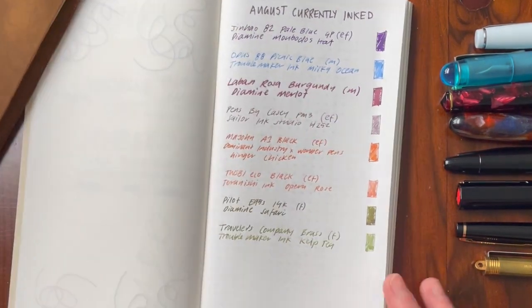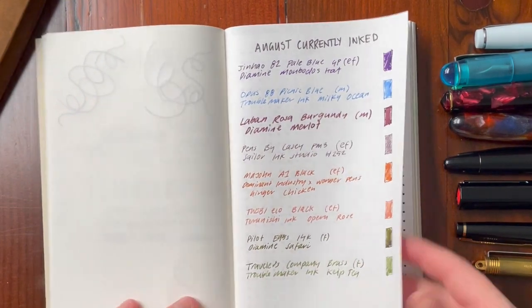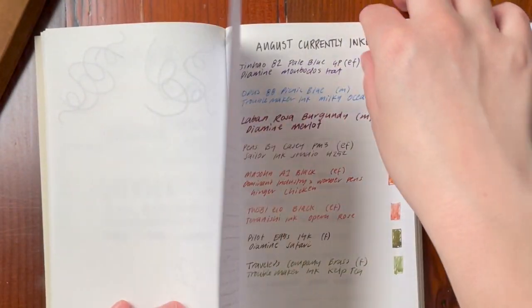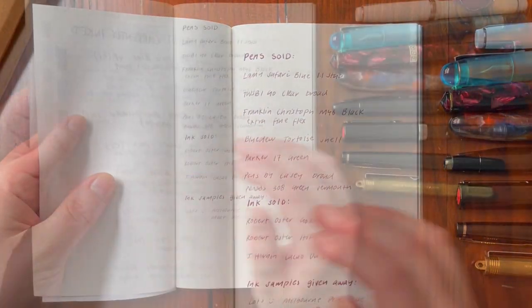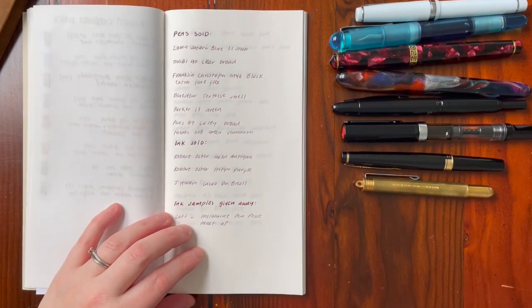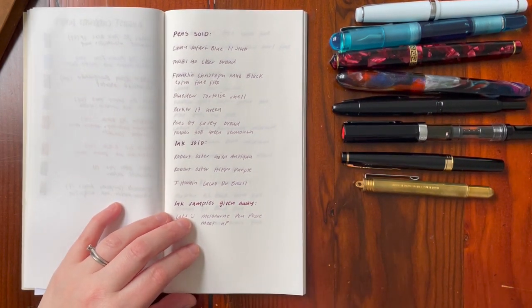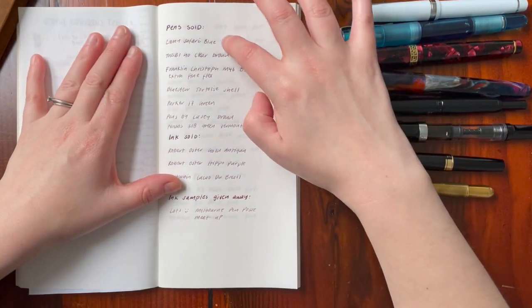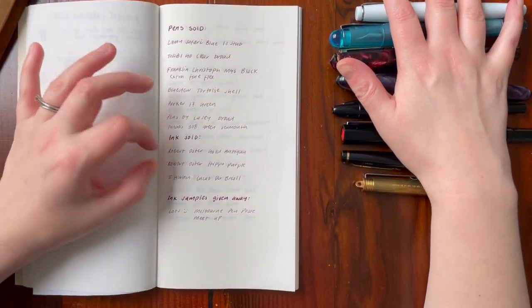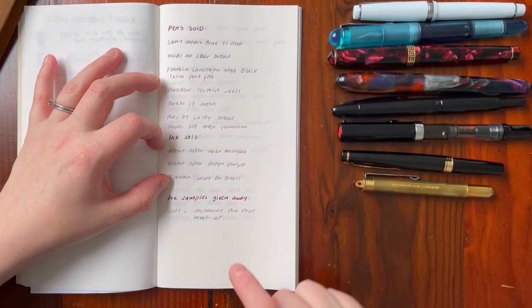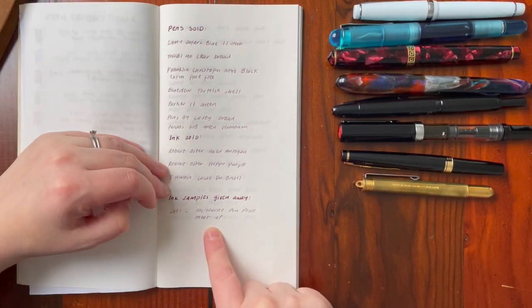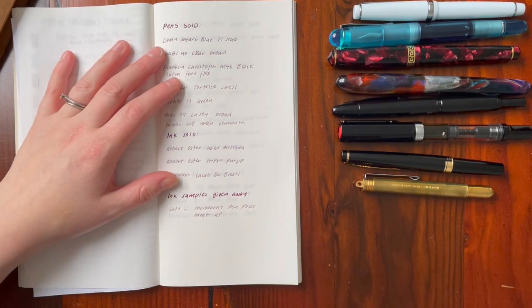So the last thing I want to show you before I go is I decided to do a bit of a cull and just look at what pens I'm not enjoying wanting to move on, et cetera. So I sold one, two, three, four, five, six. I sold seven pens. I also sold three bottles of ink, and then I made a big bag of ink samples and I wanted to give them away at the Melbourne pen meetup, which was last weekend.